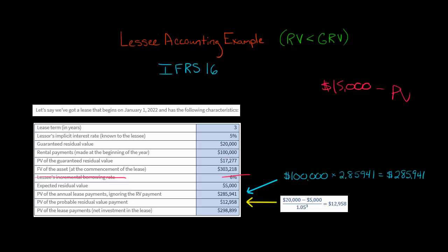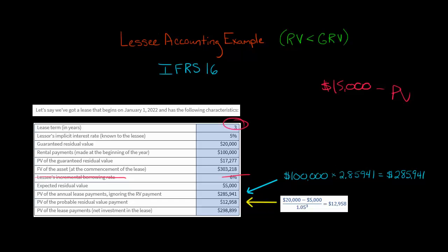When calculating the present value of the lease liability, it consists of two things. First, the $100,000 payments — we have three payments of $100,000 and need to take the present value of that. You multiply by 2.85941, which is the present value of an annuity due of $1 given three periods and a rate of 5%. It's an annuity due because the first payment is made on day one of the lease. So $100,000 times 2.85941 gives us $285,941 — that is just the present value of the three payments of $100,000.